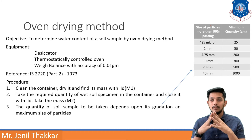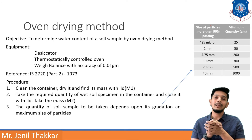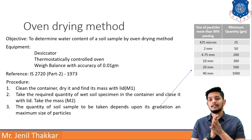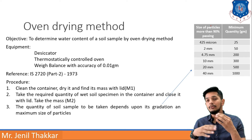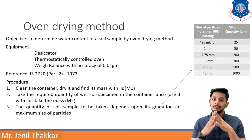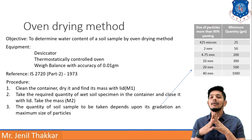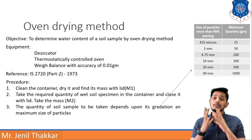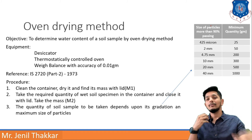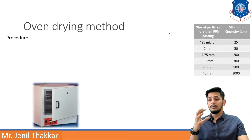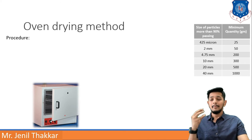Continuing the table: for 10 mm, take 300 grams; for 20 mm, take 500 grams; and for 40 mm, take 1000 grams (1 kg). This is how you decide the quantity of the soil sample. The figure shown here is a thermostatically controlled oven in which you place your soil for a set duration at a set temperature.